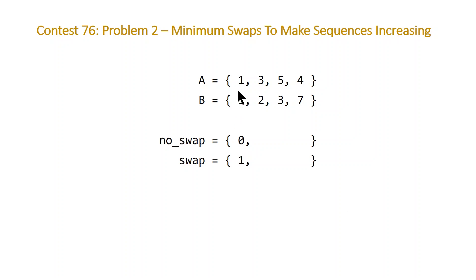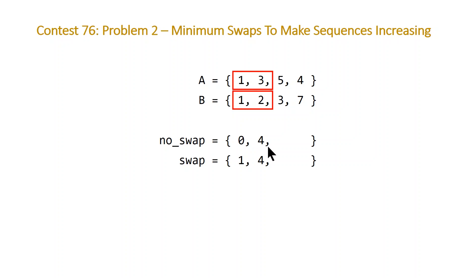We initialize the first element at index zero: 'no_swap' equals zero and 'swap' equals one. Then we compare elements two at a time. We initialize values at the next index to a very large number — at minimum the length of the array, though some solutions set this to the maximum possible integer value. We then compare adjacent elements: if the value at index i is greater than the value at i minus one for both a and b, we know we don't need to swap anything here.